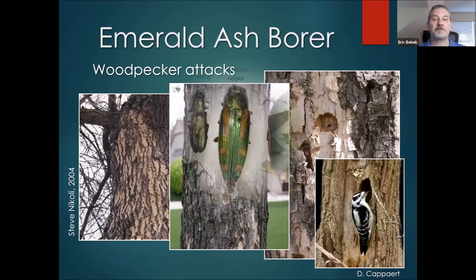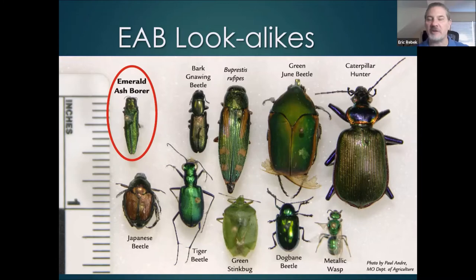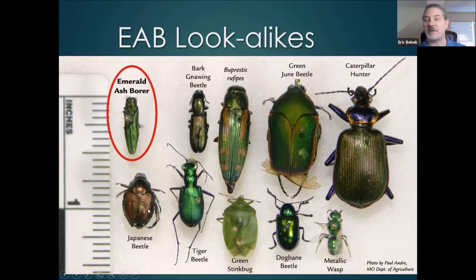There are a lot of emerald ash borer look-alikes out there. As an extension specialist, one thing we have to be aware of is that people not as familiar with insects will give us a lot of mistaken identities. We get a lot of phone calls and emails from folks who think they have emerald ash borer, but what they're actually sending us is something like green June beetles, fiery caterpillar hunters, metallic wasps, green tiger beetles, or Japanese beetle — another invasive exotic species. Basically the public at large starts to think if it's green, it has to be emerald ash borer. There are a lot of shiny green insects out there, so we have to go beyond just the color to definitively identify these critters.